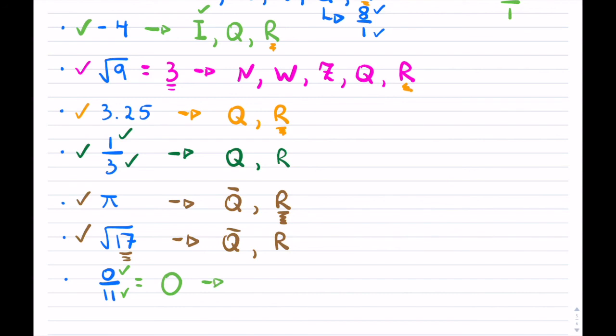And 0 is not a natural number, but it is a whole number, it's an integer, it is rational, and it is real.